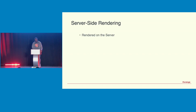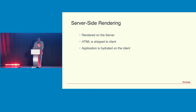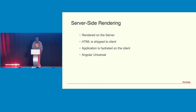Server-side rendering is another common meta-framework feature. With SSR, your single page app is rendered on the server, the HTML is shipped to the client already formed, and then the application is hydrated on the client side. The most common implementation in the Angular ecosystem is Angular Universal, which is an add-on to an existing Angular application that enables server-side rendering and pre-rendering.